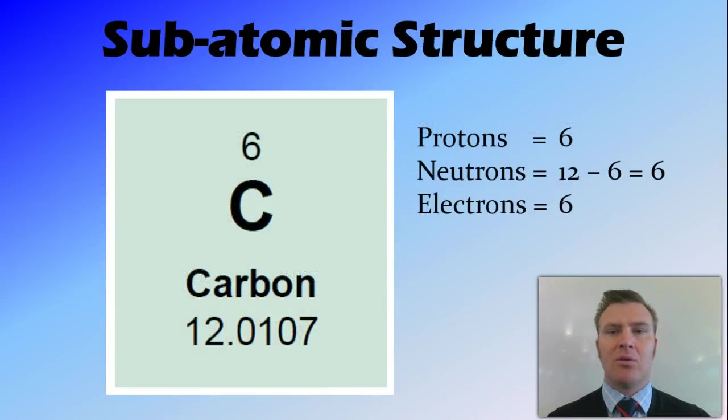For example, we can have a look at carbon. Carbon has an atomic number of six, therefore it has six protons, and has an atomic mass of 12. So the number of protons plus neutrons equals 12. And we know that there are six protons, so there must be six neutrons. And because there's six protons, we know that there's also six electrons.